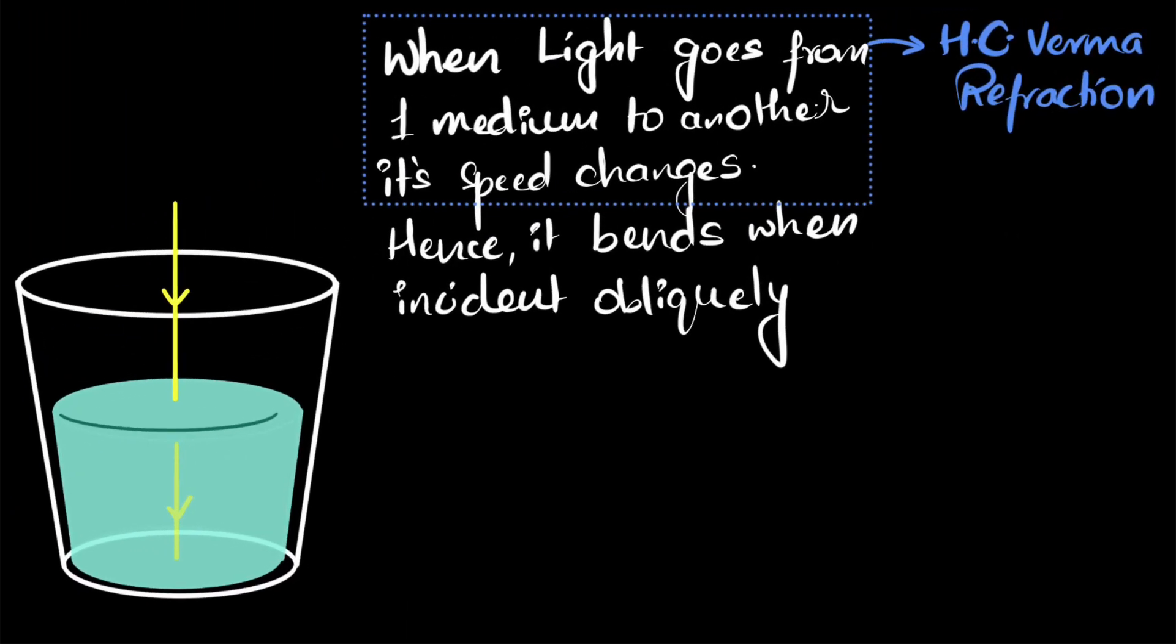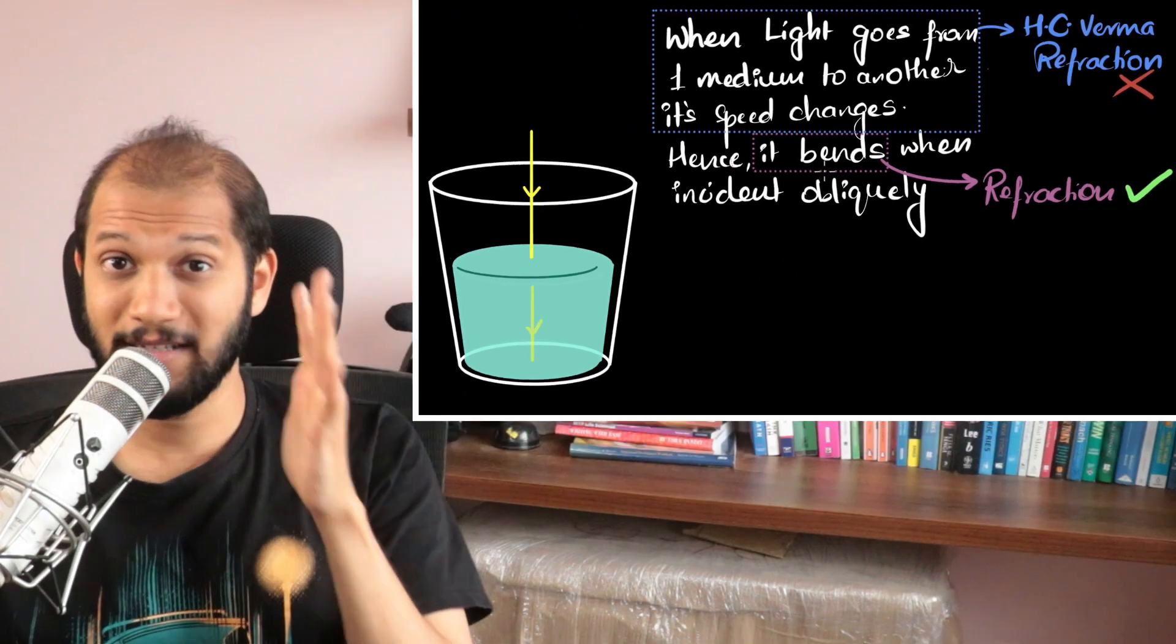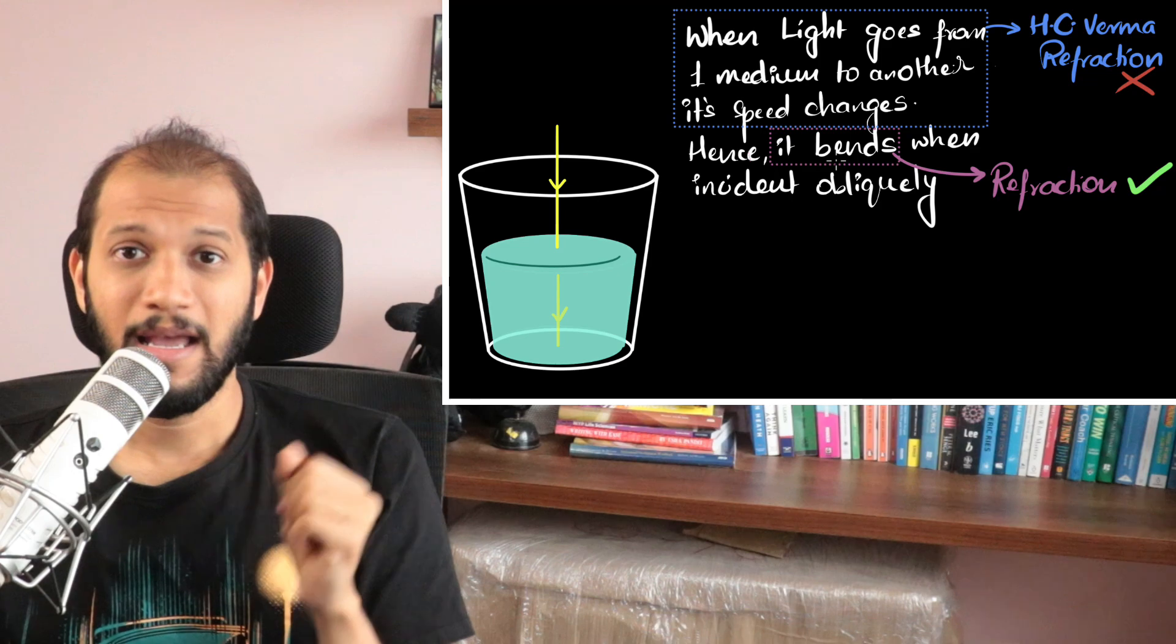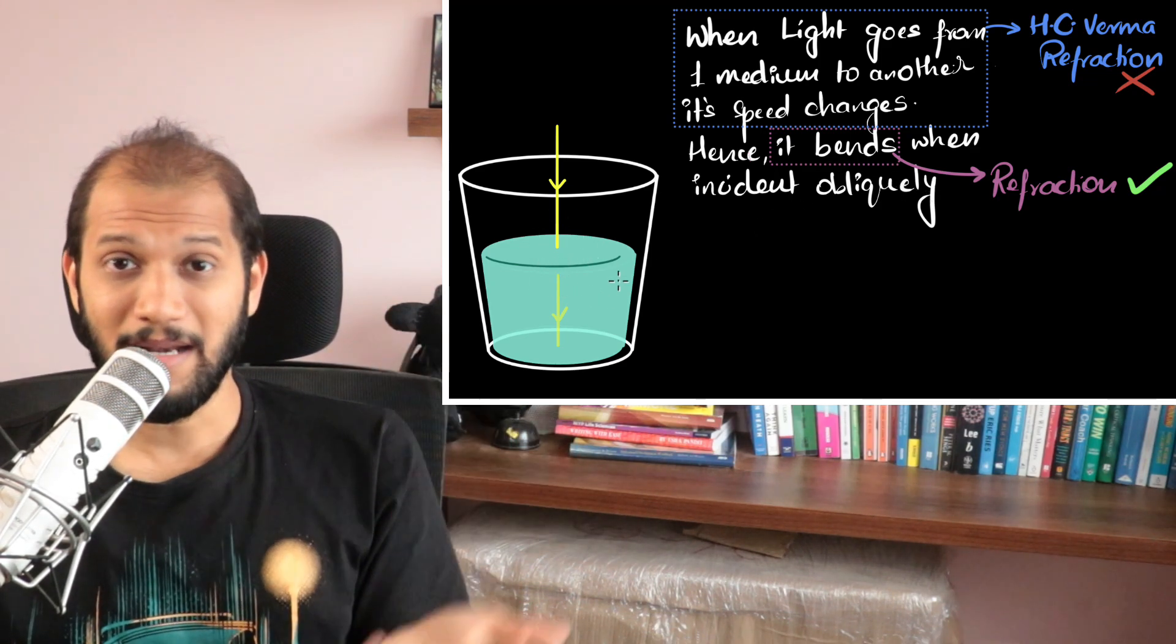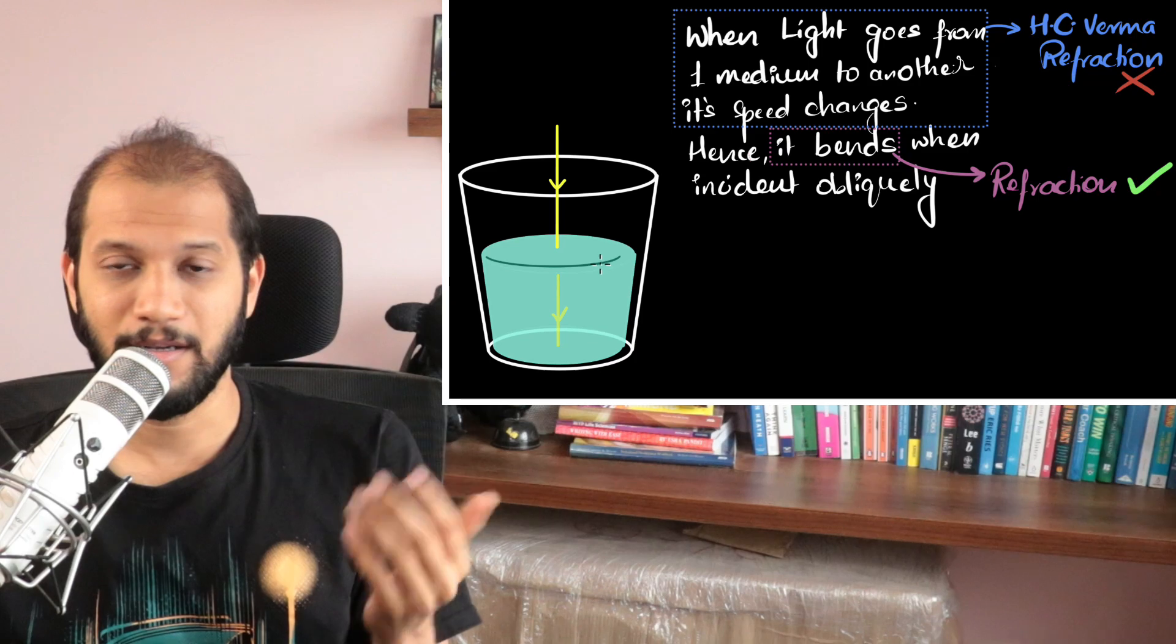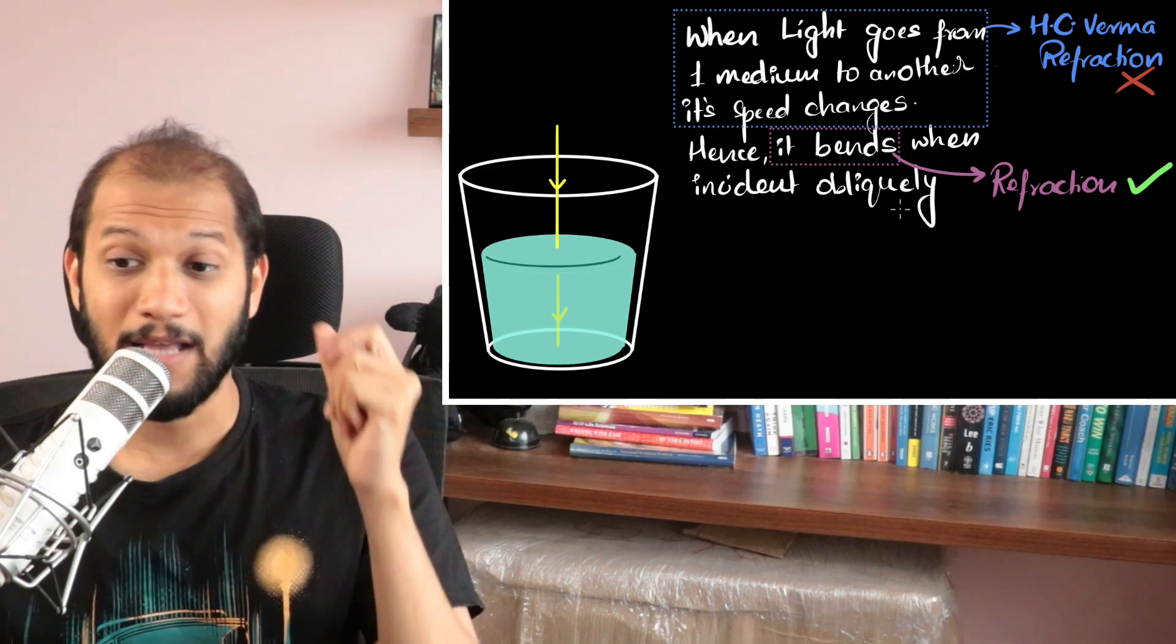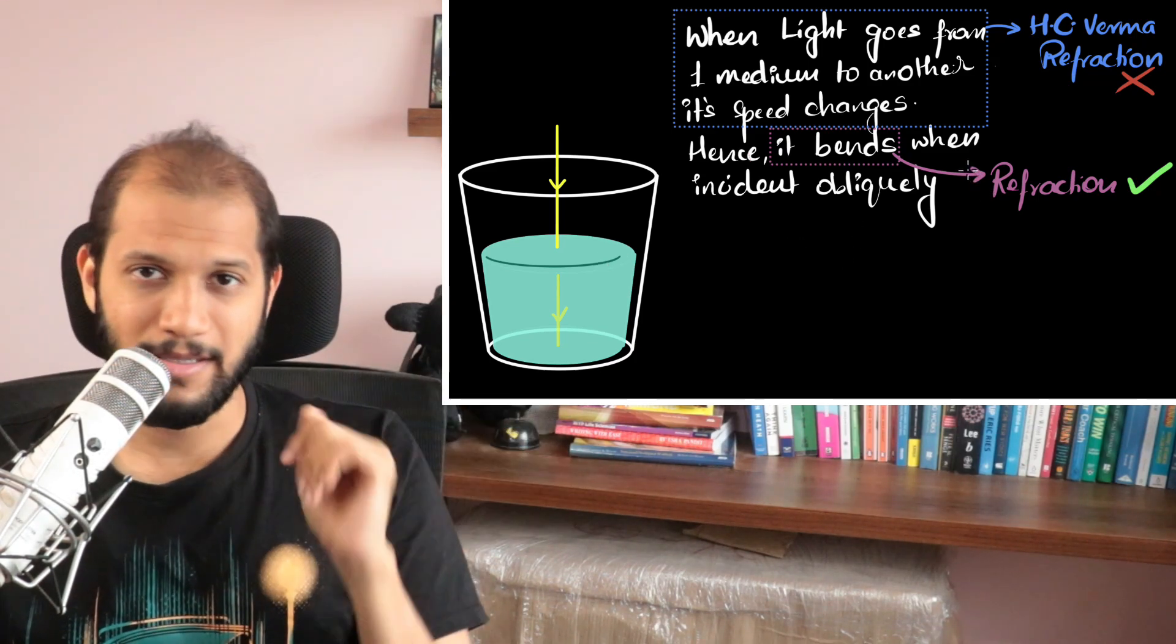Whereas, I think that's not what refraction is. I think the definition of refraction is the fact that it bends. Whenever light bends, we say that is what refraction is. And the reason for refraction is that the speed changes, but refraction itself is bending of light. And so from this definition, light is not changing its direction. It's not bending, and therefore from this definition over here, there is no refraction happening. And I think this is what refraction is, and this is why I disagree with Professor Verma.